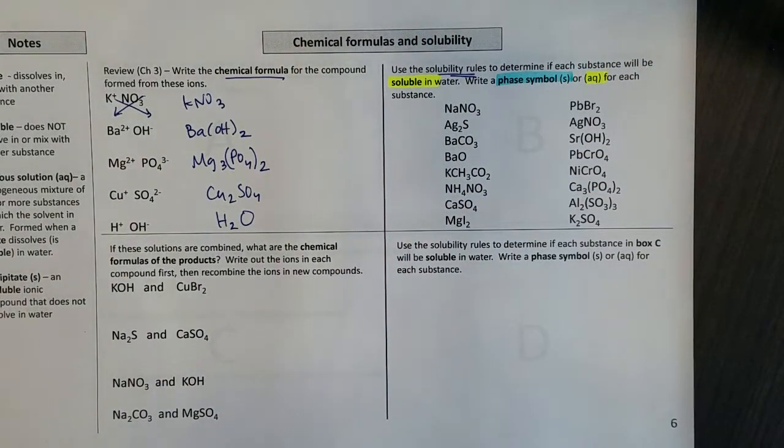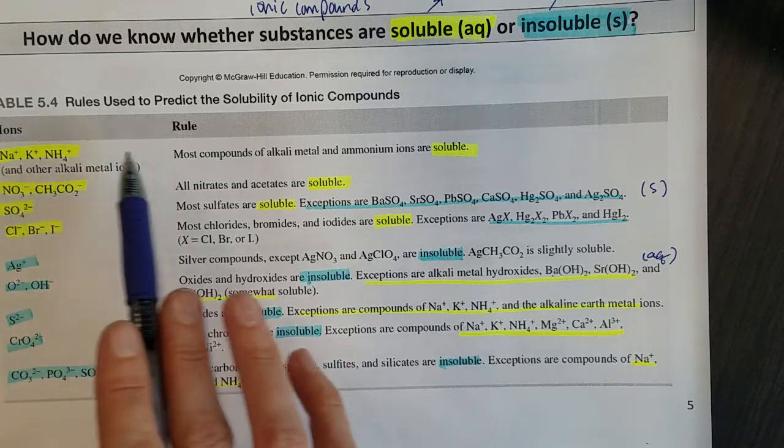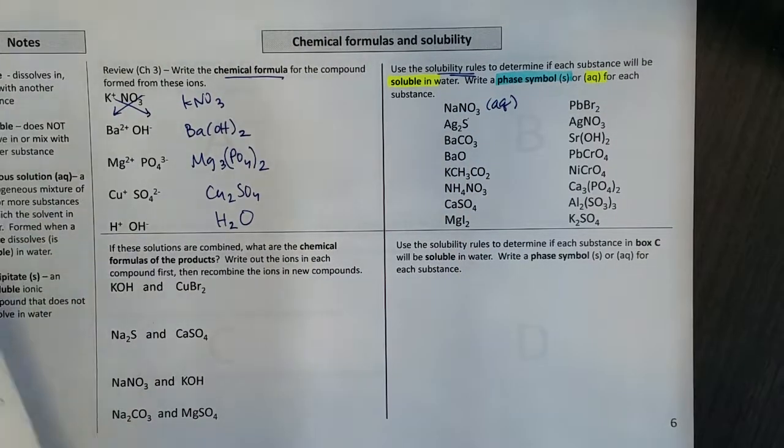So let's look at the first one, sodium nitrate here. And if I look on my solubility rules, here's sodium ions. Sodium ions are soluble, so that means that I would write aqueous for my sodium nitrate.